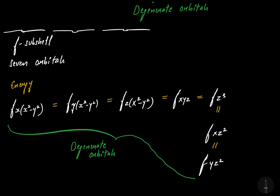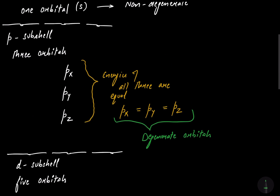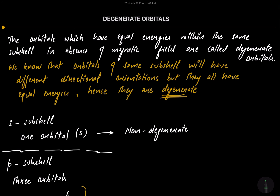That's all for today. I hope you got the meaning of degenerate orbitals — orbitals within the same subshell which have equal energies are called degenerate orbitals. They differ only in their space orientations but have equal energies, hence they are degenerate. If any student wants to book a paid one-to-one online class, my phone number is mentioned on the thumbnail. Please like, subscribe, and share my channel. Don't forget to press the subscribe button. Stay blessed.